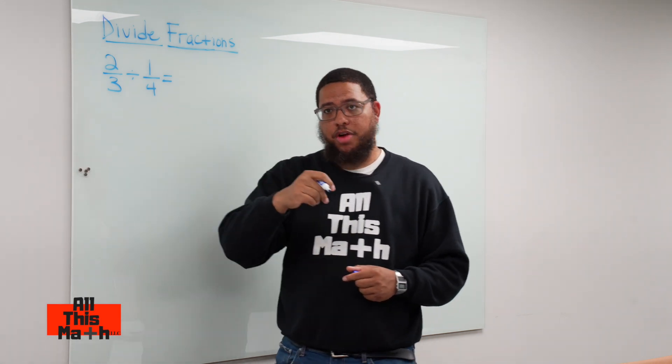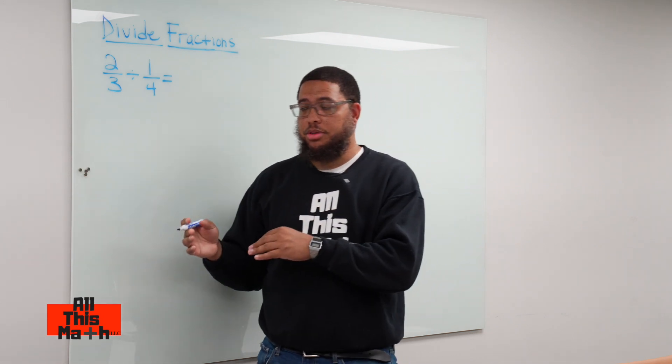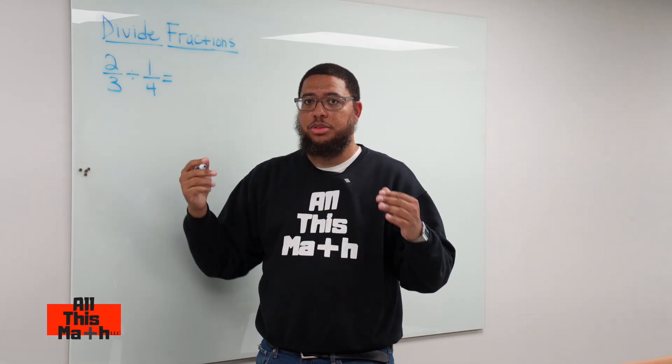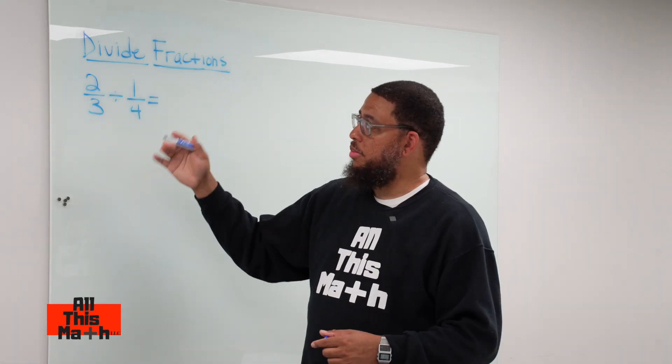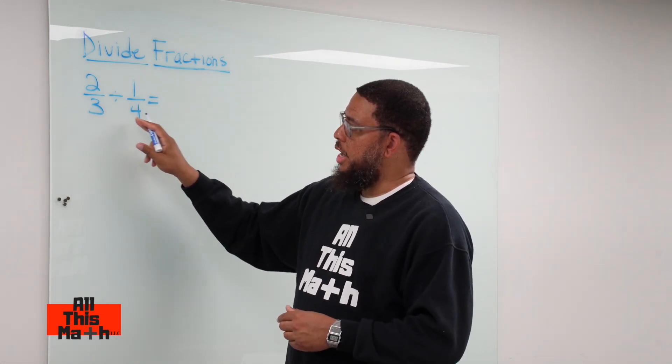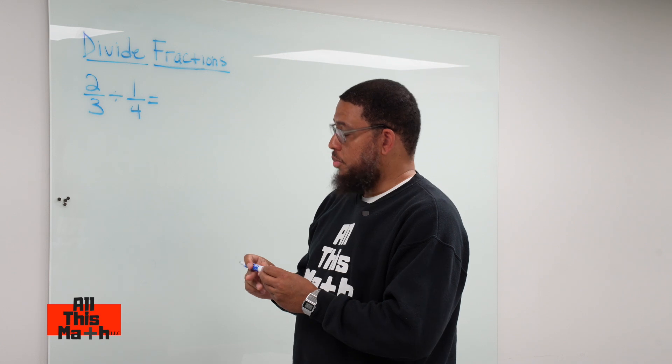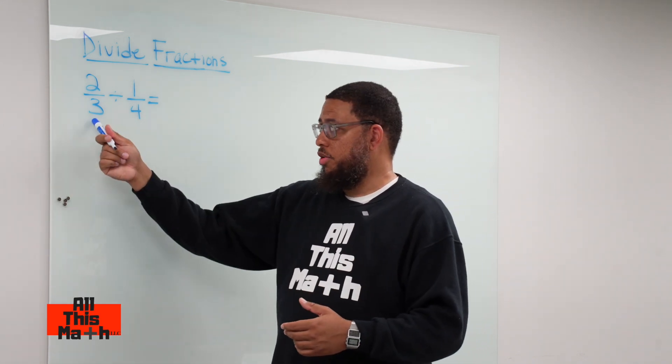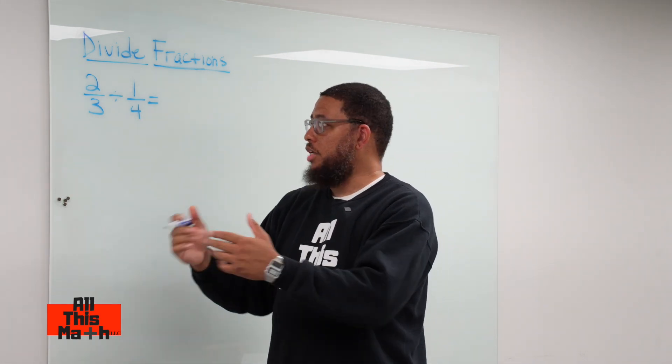Think about when you're adding or subtracting fractions—we must have common denominators in order to add or subtract fractions. We can do the same thing when we're dividing fractions. So what would the least common denominator be of 3 and 4? We would say 12, because 12 is the smallest number that both 3 and 4 can multiply into evenly.